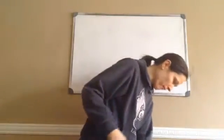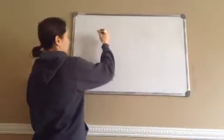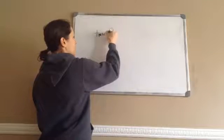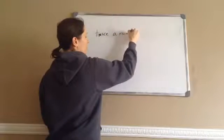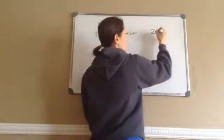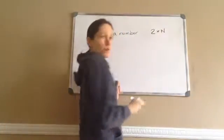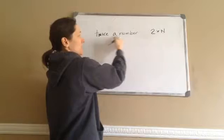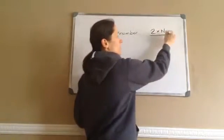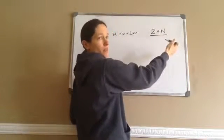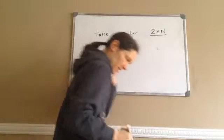For example, if I said twice a number, basically I'm saying two times a number. Twice a number, this is the equation, two times a number. Okay, let's come up with another.